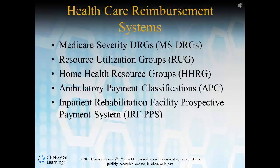Home health resource groups were implemented in the 2000s via the Omnibus Consolidated and Emergency Supplemental Appropriations Act. Medicare home health services are reimbursed according to prospectively determined rates and require that all organizations must be recertified every 60 days.